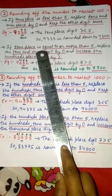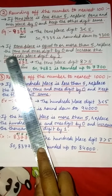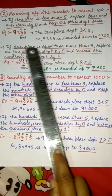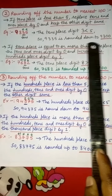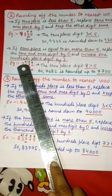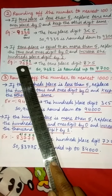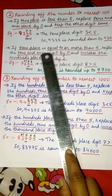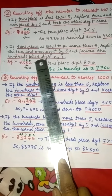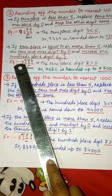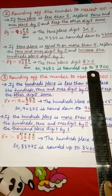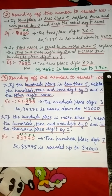Rule 2: if the tens place digit is equal to or more than 5, replace the tens and ones digits by 0 and increase the hundreds digit by 1. For example, 7,682. The tens place digit is 8, and 8 is greater than 5. So we write 0 in the tens and ones places and add 1 to the hundreds digit: 6 becomes 7. So 7,682 is rounded up to 7,700.